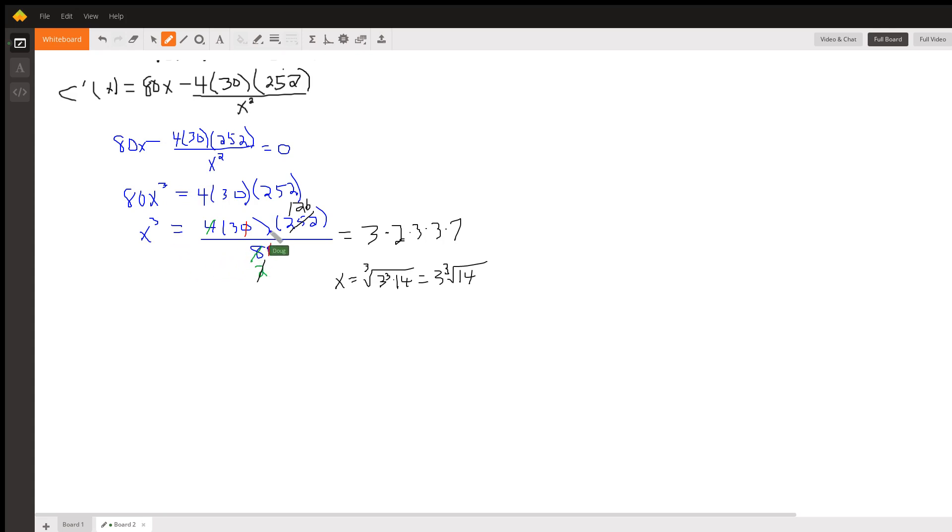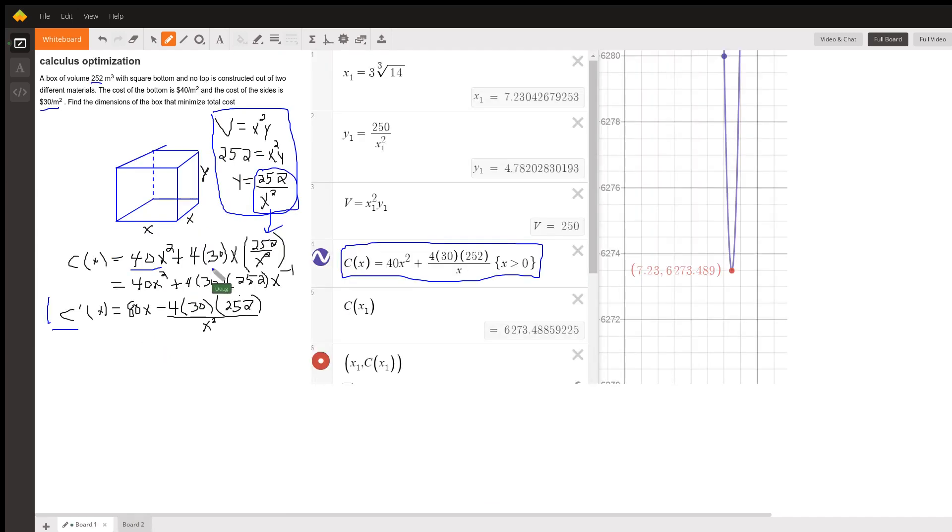Divide by 80, cancel out, and I see that I get 3 times 126. This is really 126 written in prime factored form. So I can see that x is the cube root of three factors of 3, 3 cubed times 2 times 7, or 14. I can take the cube root of 3 cubed and get 3. So 3 cube root of 14 represents the dimension of the base.